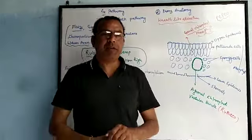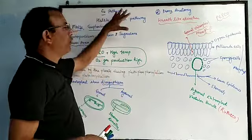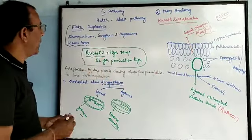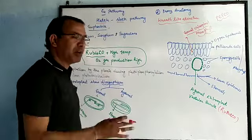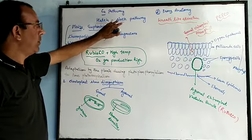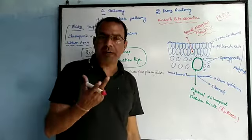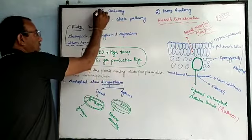Hello students, in the previous part we discussed the C3 pathway, and in this part we will discuss the C4 pathway. The C4 pathway is also known as the Hatch-Slack pathway because it was observed by Hatch and Slack, just like the C3 pathway is known as the Calvin Cycle after Melvin Calvin.